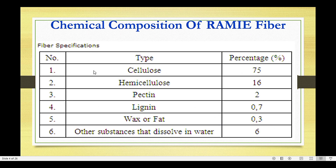The chemical composition of Ramie fiber consists of: cellulose approximately 75%, hemicellulose 16%, pectin 2%, lignin 0.7%, wax and fat 0.3%, and other substances that dissolve in water 6%. This is the complete chemical composition of Ramie fiber.